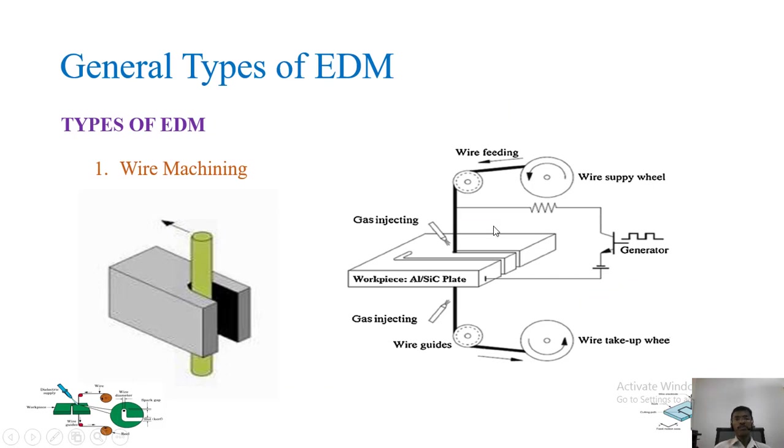Generally, two types of EDM are there. First one is wire EDM. In this wire EDM, we are going to cut the object by using a brass wire. You can see this picture. This one is the wire. This one is the direction. When the wire is moving, the object will be cut. For this wire cutting, we are going to give power supply to this workpiece and this wire. Due to this, heat will be generated. The object will be melted. The melted metal is removed by the gas injector.